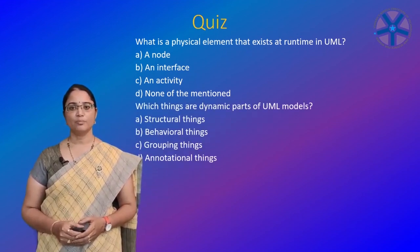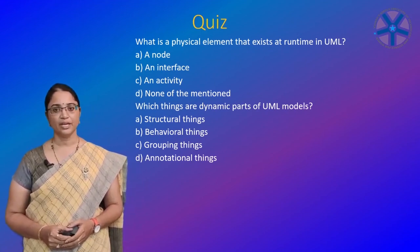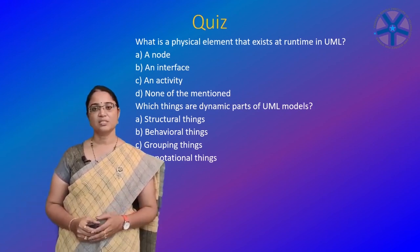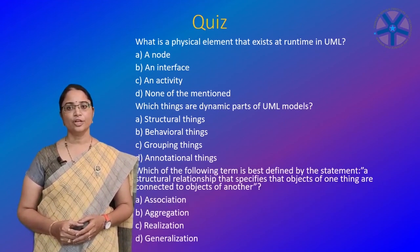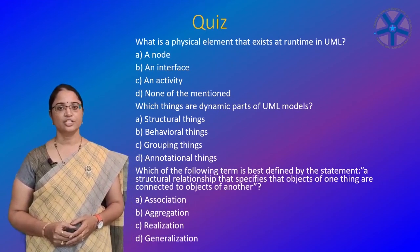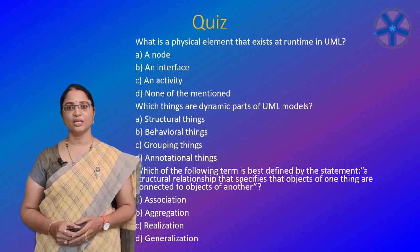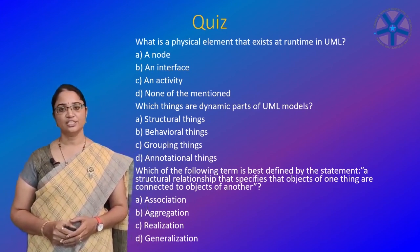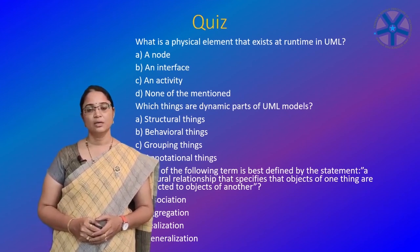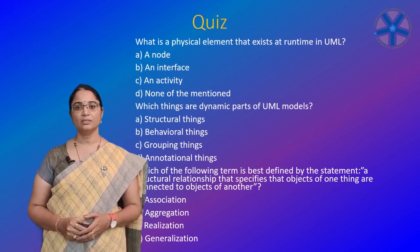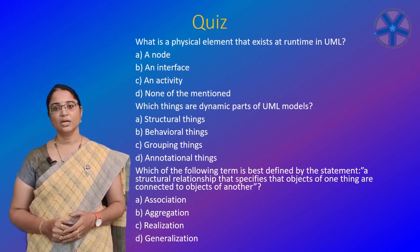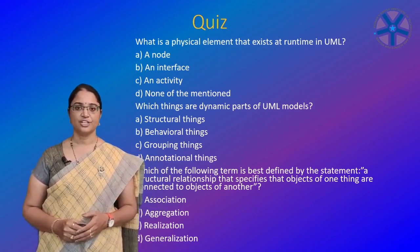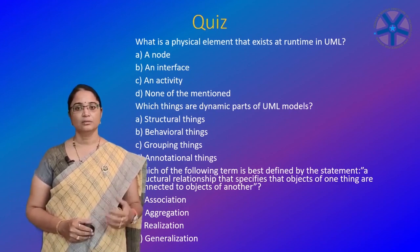Which things are dynamic parts of UML models? Structural, behavioral, grouping, or annotational things? Dynamic parts represent behavioral things. Which term is best defined as 'a structural relationship that specifies the objects of one thing are connected to the objects of another'? The options are association, aggregation, realization, and generalization — the answer is association, which represents the semantic relationship.